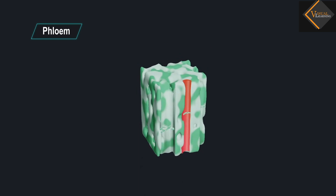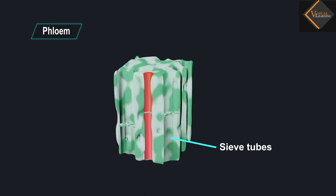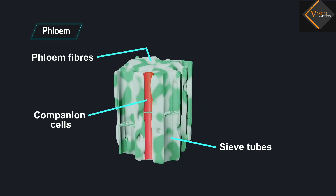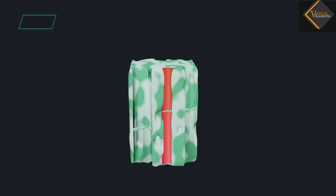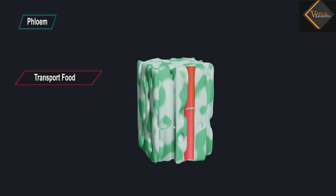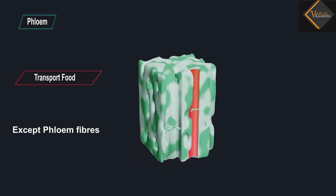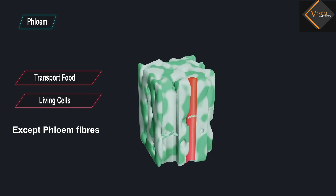Phloem is made up of four types of cells: sieve tubes, companion cells, phloem fibers, and phloem parenchyma. Phloem transports food from leaves to other parts of the plant. Except phloem fibers, other phloem cells are living cells.